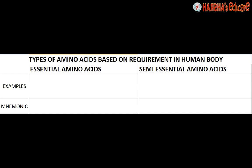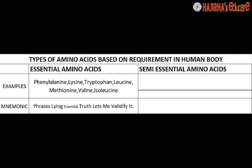The essential amino acids are seven in total: Phenylalanine, Lysine, Tryptophan, Leucine, Methionine, Valine, and Isoleucine. I have devised the mnemonic: 'PH LY TR LEX ME VAL I' — or as a phrase: 'Phrases Lying Essence Alize Westward Truth.' Let me validate it now.